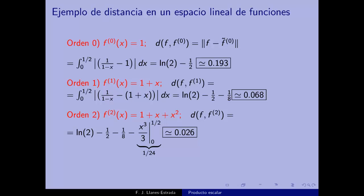La aproximación numérica se almacena típicamente en una tabla de números o array. Vamos mejorando la aproximación en cada iteración y dejamos de iterar el programa cuando se alcanza la distancia deseada, es decir, cuando la distancia es más pequeña que epsilon.